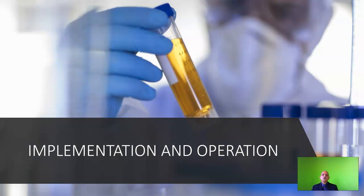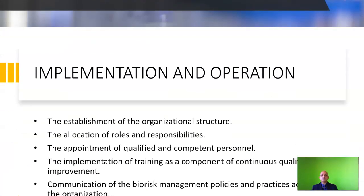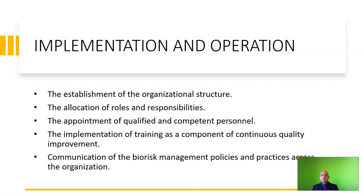Let us move on to implementation and operation. The first stage of a biorisk management system involves planning; subsequent to that, we implement this plan and operationalize it. Implementation and operation involves the establishment of the organizational structure, the allocation of roles and responsibilities to every member, the appointment of qualified and competent personnel, the implementation of training as a component of continuous quality improvement, and communication of the biorisk management policies and practices across the organization.